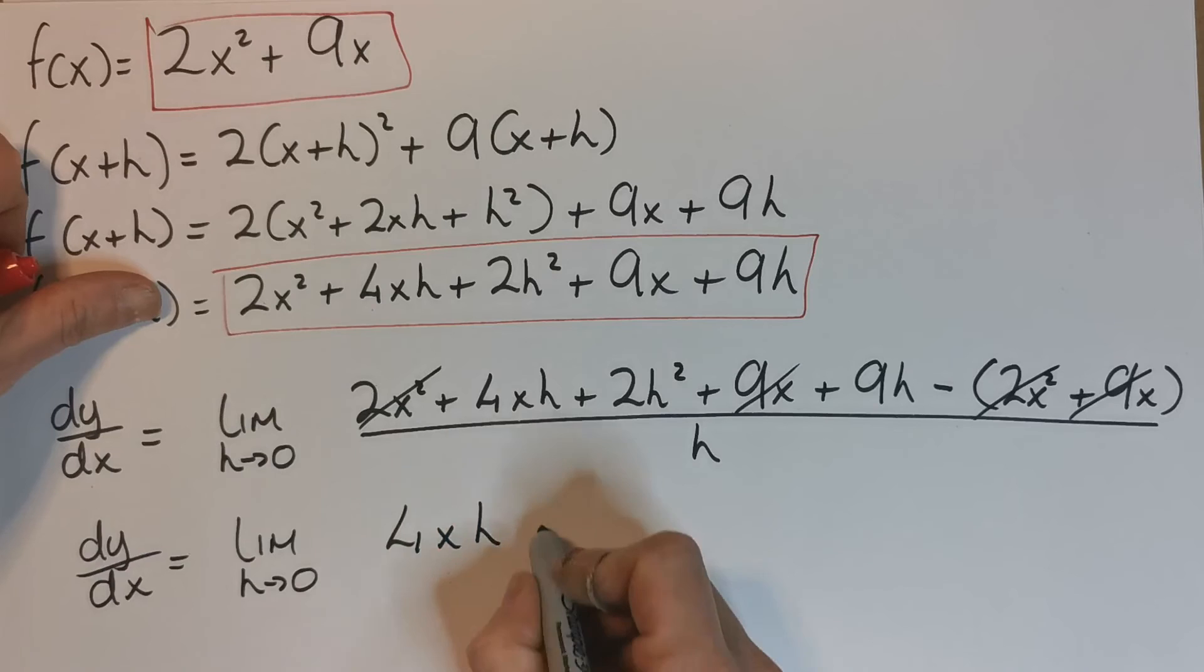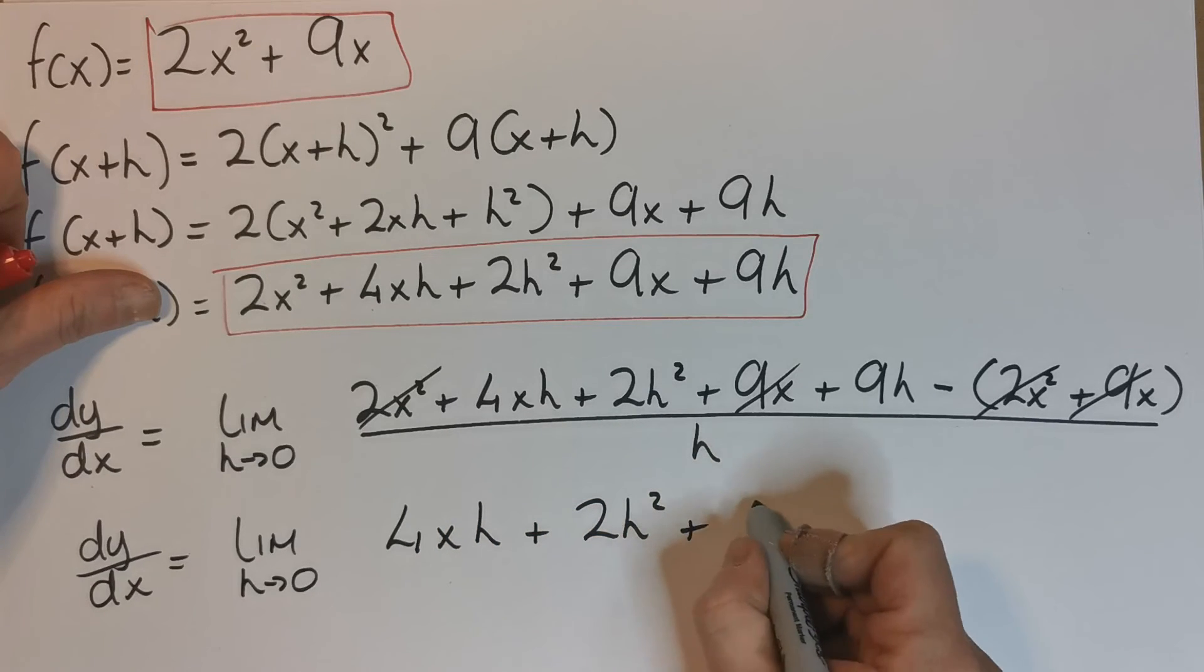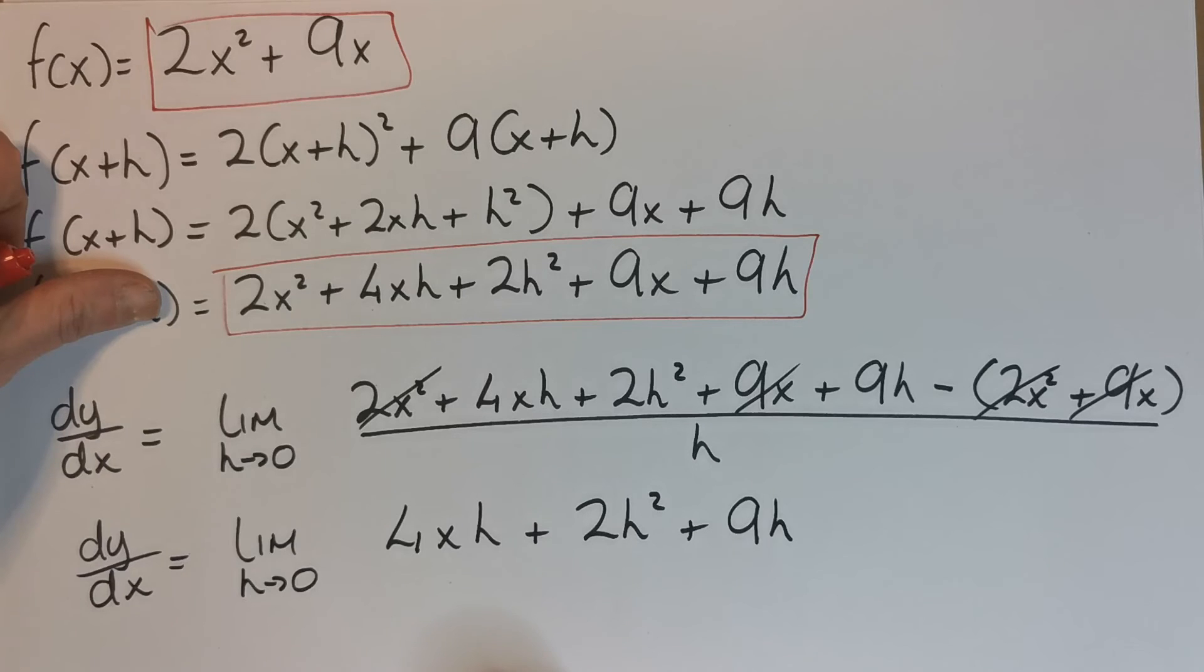So what am I left with on the top? I'm left with 4xh + 2h² + 9h, and that's it on top, all over h.